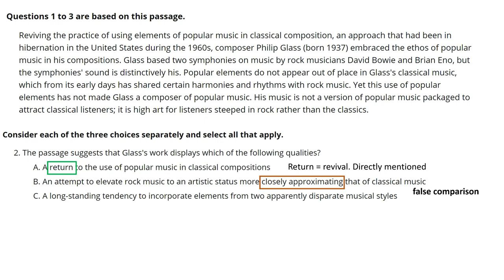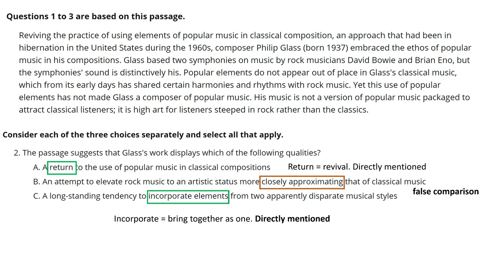Answer C: does Glass's work display a long-standing tendency to incorporate elements from two apparently disparate music styles? Yes, as long as you understand the vocabulary. 'Incorporate' means to bring together; 'disparate' means seemingly different. Throughout, there's evidence he was bringing together rock and classical — he shared certain harmonies and rhythms, and popular elements do not appear out of place. This is clearly a correct answer directly mentioned in the passage, with the only difficulty being unfamiliar vocabulary.